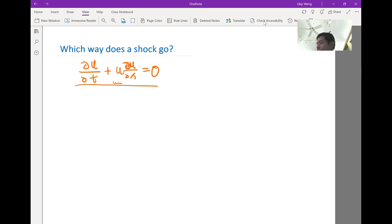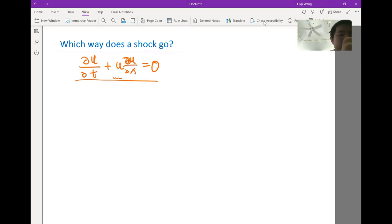Finite volume scheme actually doesn't really apply to any differential equation. It only applies to differential equations that are derived or can be derived from a conservation law. So what does that mean? That means finite volume schemes apply to differential equations that can be written in such a form.